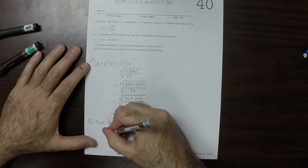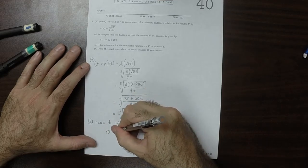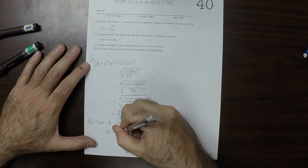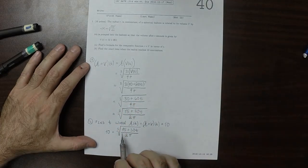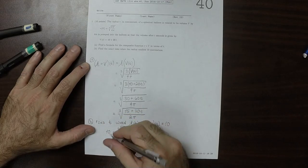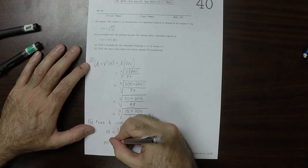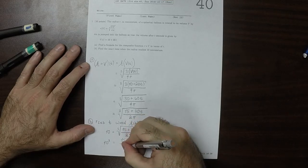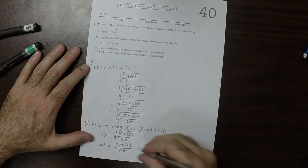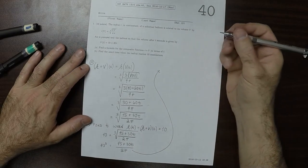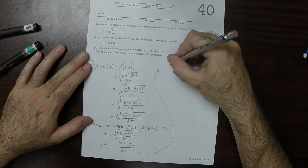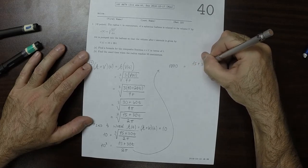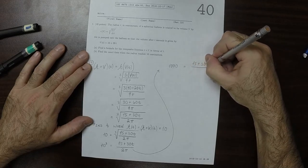Okay, so then 10 is equal to cube root 15 plus 30T over 2 pi. So we want to get rid of the cube root, so we'll cube both sides. Well, 10 cubed is 15 plus 30T over 2 pi. Now, 10 cubed is 1000. So that is 1000 equals 15 plus 30T over 2 pi.